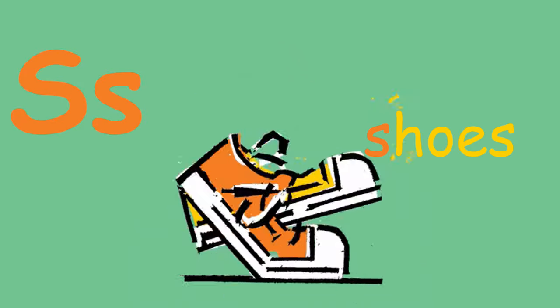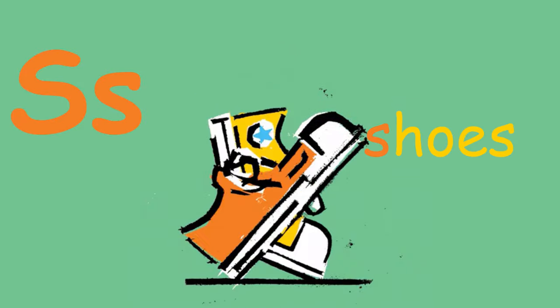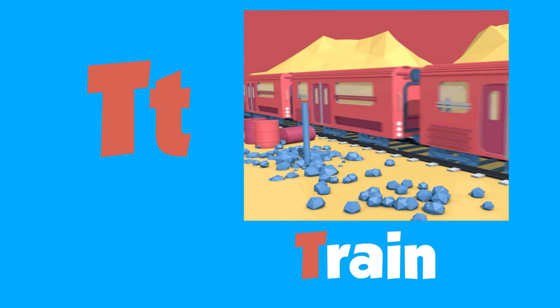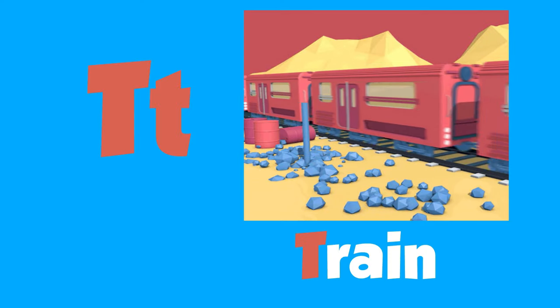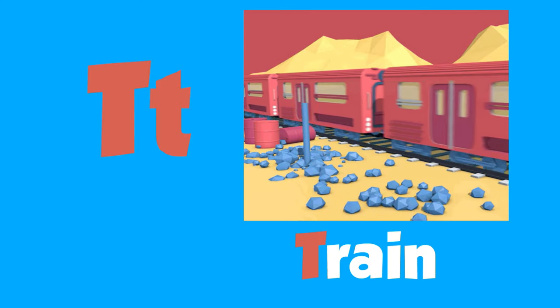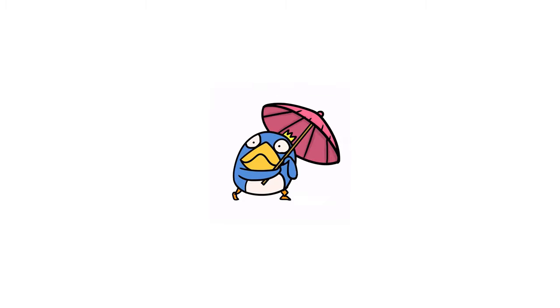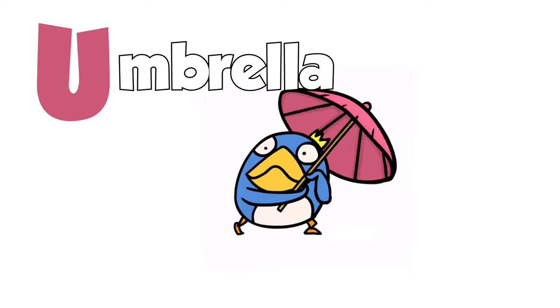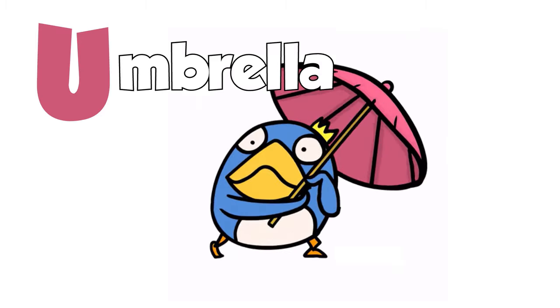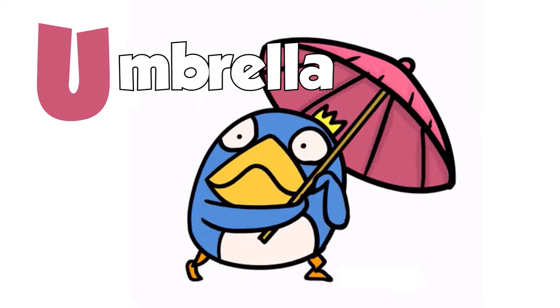S is for shoes. Shoes. T is for train. Train. U is for umbrella. Umbrella.